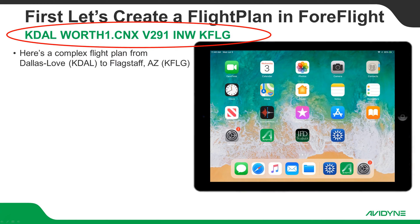Here's a pretty complex flight plan — it's a clearance from Dallas Love to Flagstaff. This is the Worth One departure to the Corona VOR CNX, to Victor 291, to the Winslow VOR INW, and on to the airport KFLG. At the end of this presentation, I will also have a live video showing it in real time, but I wanted to show you with screenshots and printed instructions first.